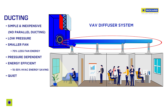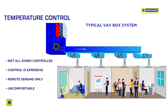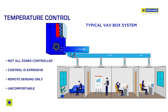The system is not only more efficient, it also runs more quietly. When using a VAV box system, creating control in every zone adds cost and can become prohibitively expensive. For this reason, zones are made bigger, compromising occupant comfort, which results in lower productivity.